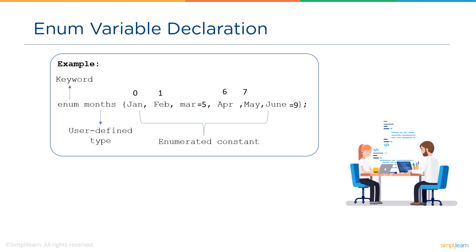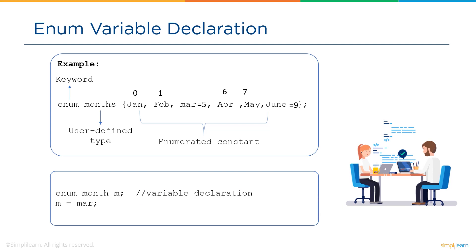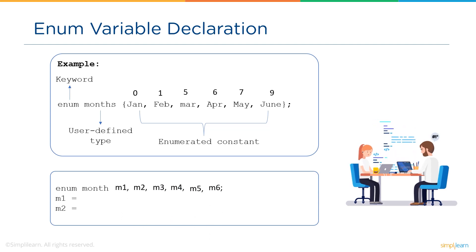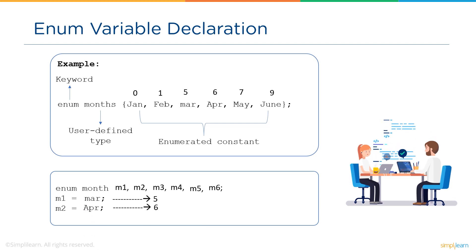For the variable declaration, the variable m is declared of the type month, and this variable can have only one value from the listed enumeration constants — multiple values for a single variable are not allowed. We can also declare various variables for listed constants, for example m1, m2, m3, and so on. We can assign enumeration constants to the variables, like m1 equals March and m2 equals April, so m1 and m2 will hold integer values 5 and 6 respectively.